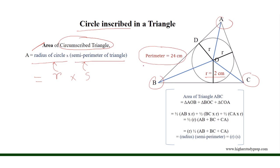So the semi-perimeter equals half of 24 cm, which is equal to 12 cm. So we can get that the area of circumscribed triangle ABC equals 2 times 12, which results in 24 cm².